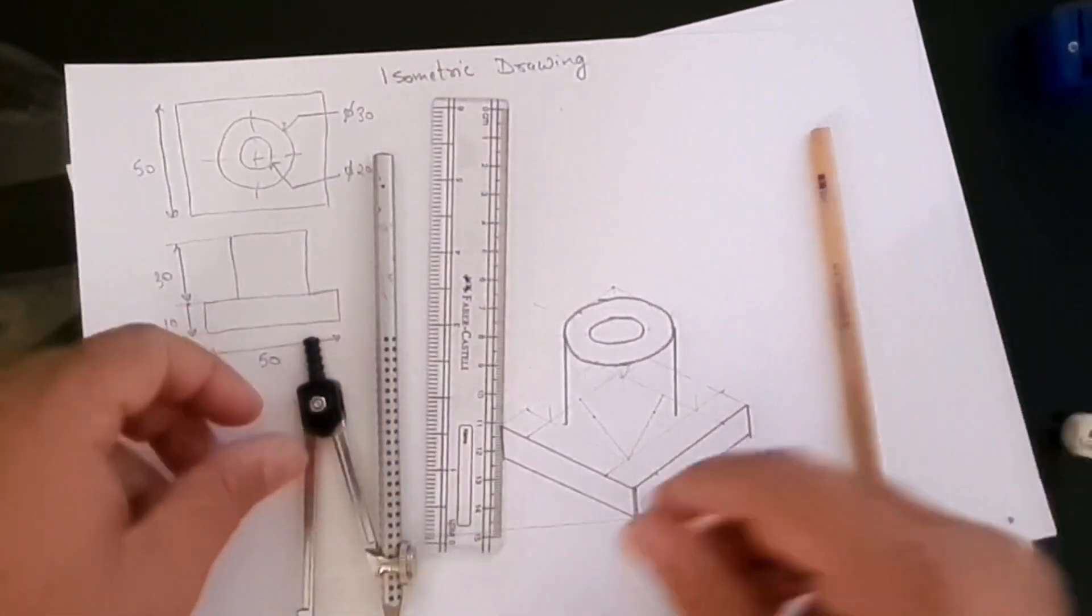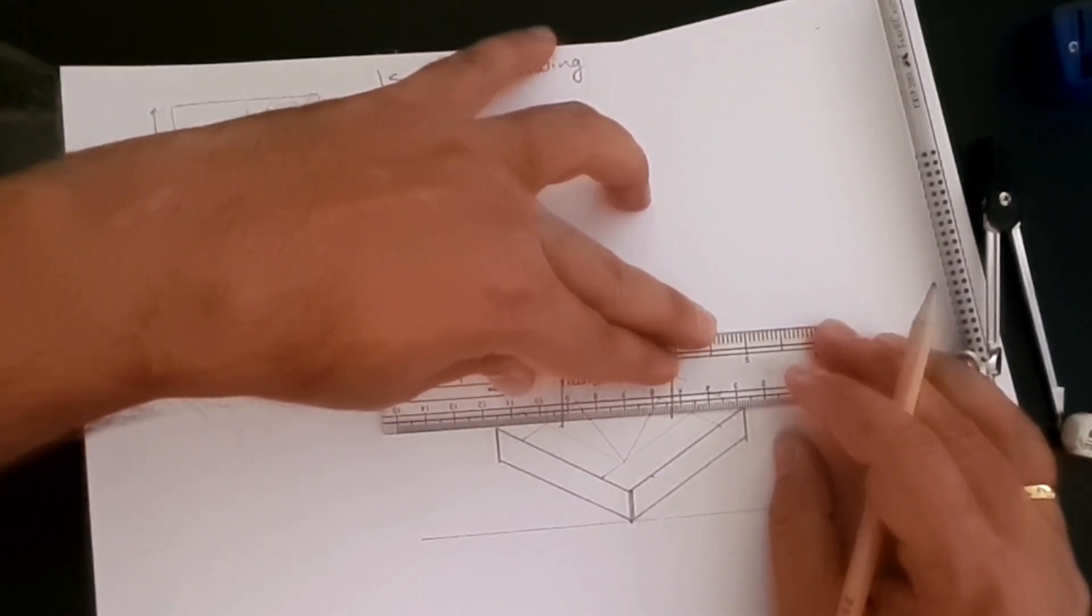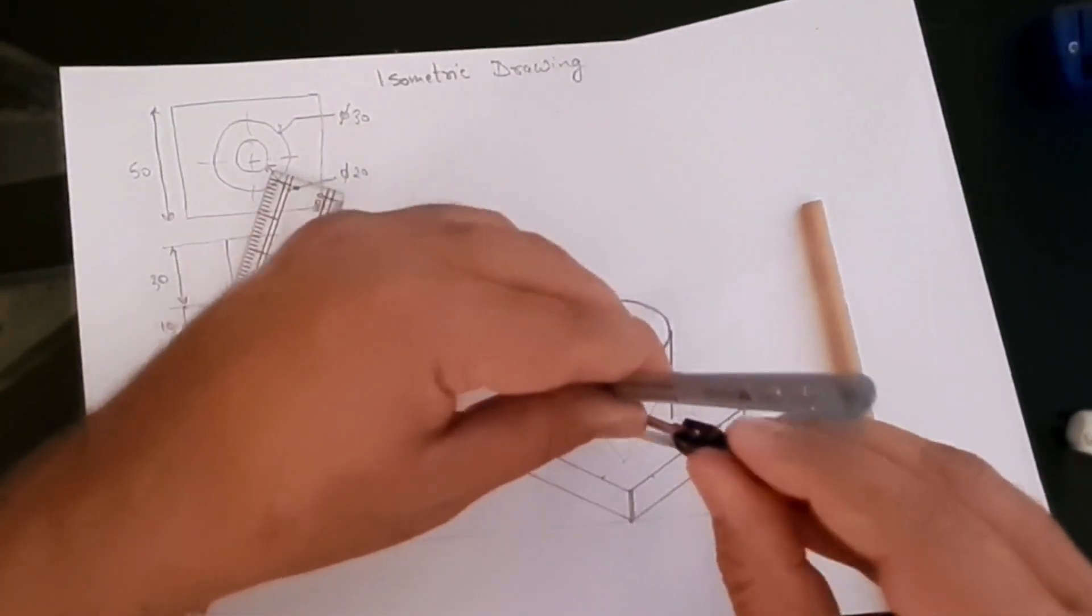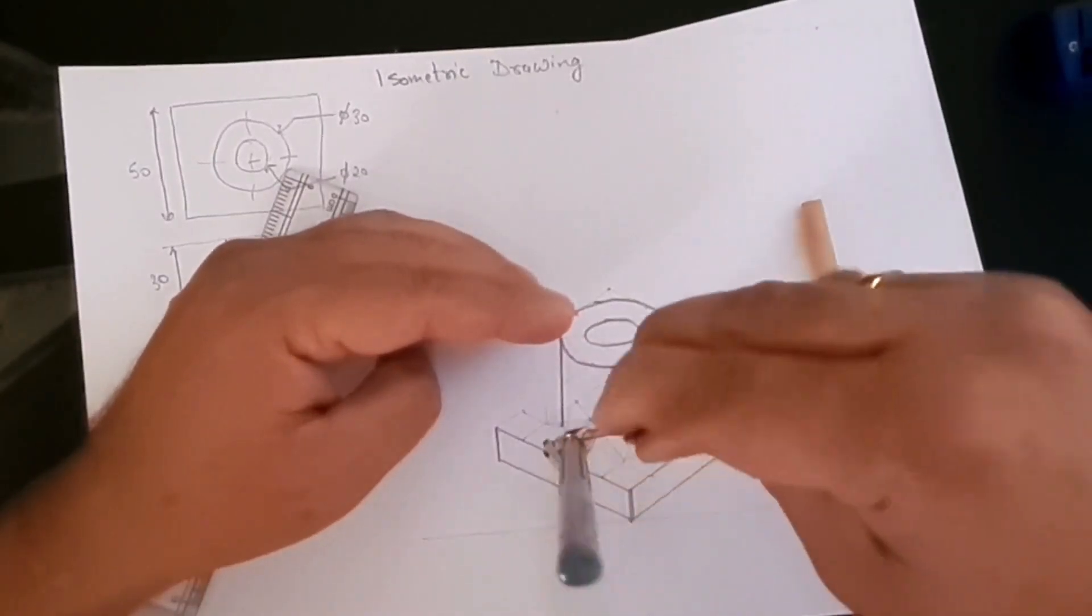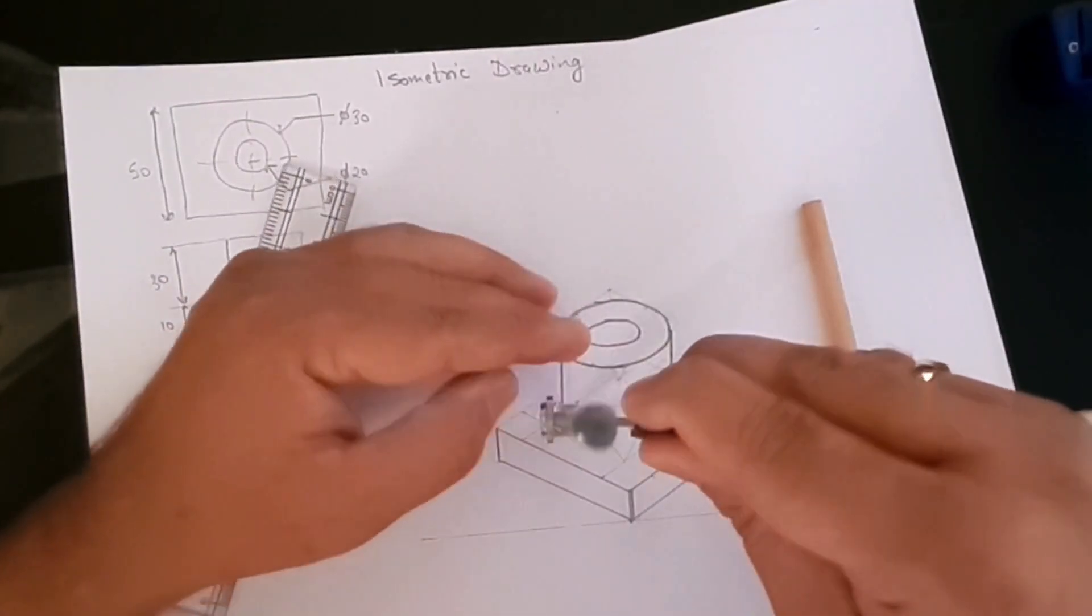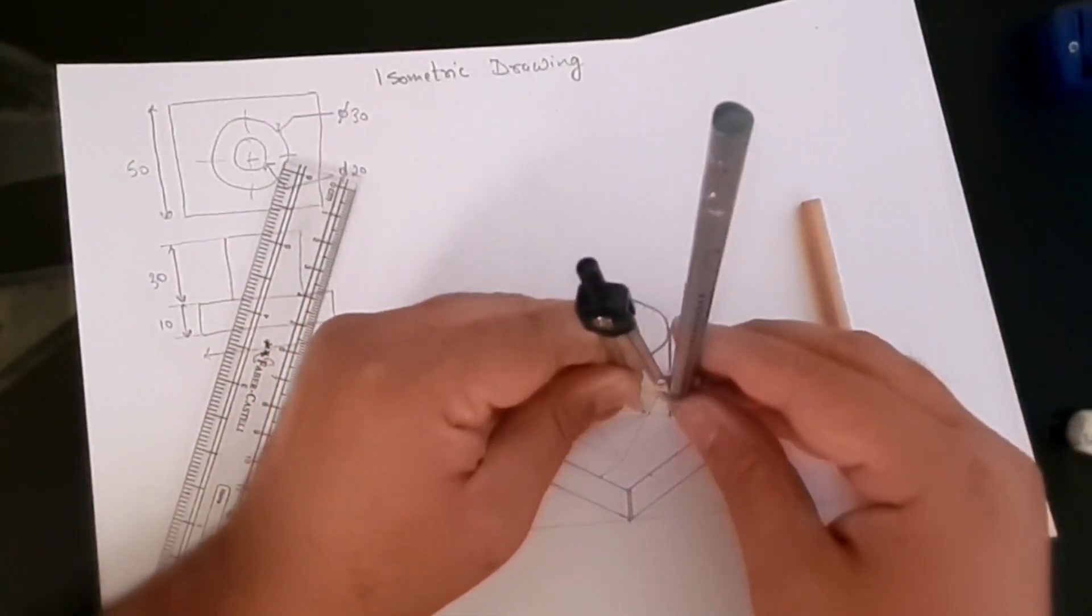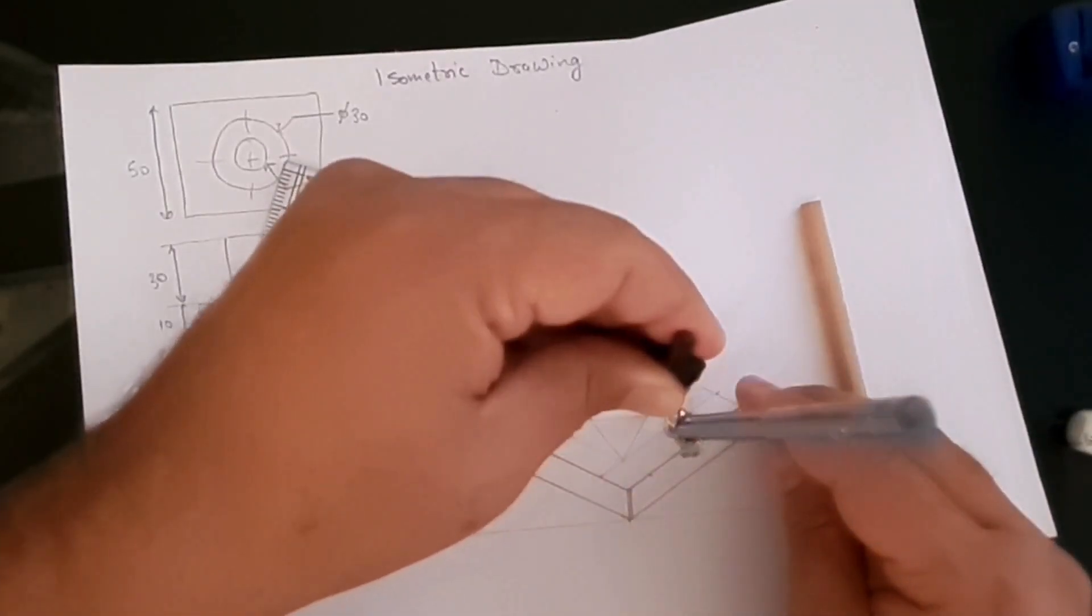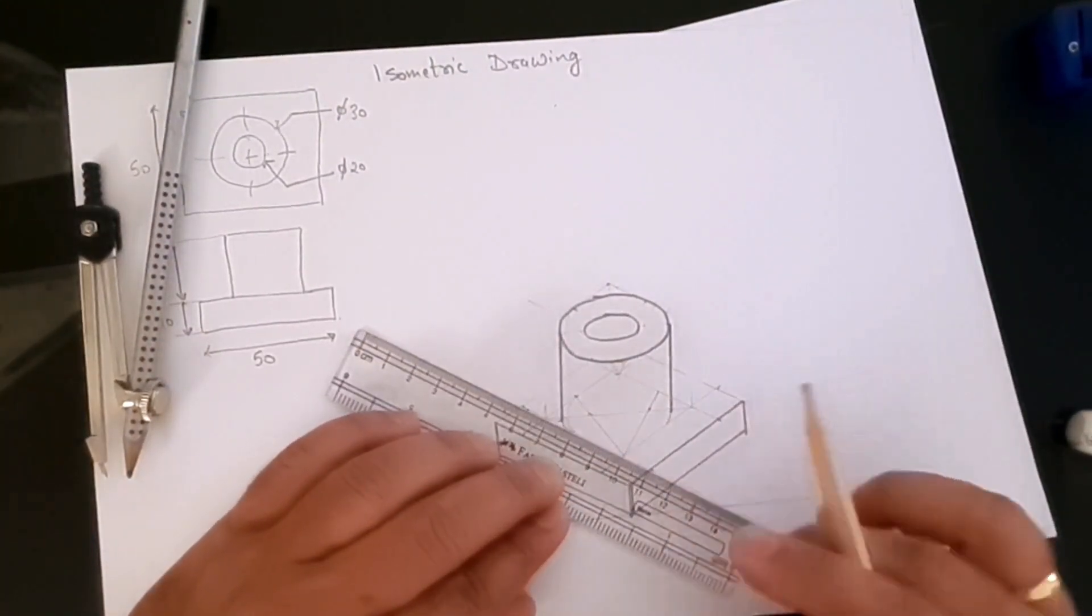Well, first of all, let's create this. Now again, this circle will start from here, so that's our circle. And then same thing here.